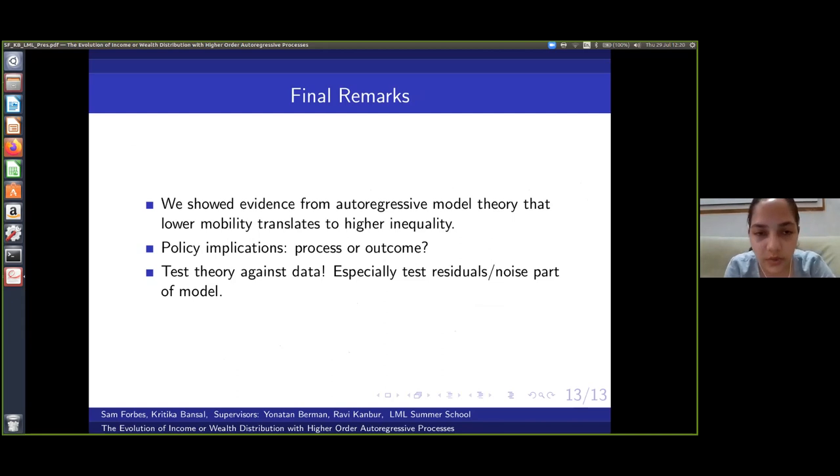Overall, in our work we were able to show the relationship between equality and mobility. Higher values of beta implies lower mobility, which is reflected in society as higher inequality. Now one might ask, why is it important to ask this question, why is it important to pursue this research? It is crucial because it puts us in the center of debate of process policies versus outcome policies.